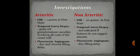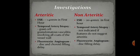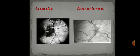To confirm the diagnosis, certain investigations are needed. Erythrocyte sedimentation rate: more than 40 mm in the first hour in arthritic type; around 20 to 40 mm in the first hour in non-arthritic type. Temporal artery biopsy is indicated in arthritic AION if features are suggestive of giant cell arteritis, but not indicated in non-arthritic type. Fluorescein angiogram is done in both conditions: in arthritic AION it shows disc and choroidal filling delay; in non-arthritic AION it shows disc filling delay only.